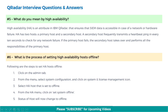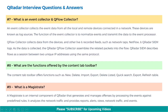Next, what is the process of setting high availability hosts offline? Following are the steps to set HA hosts offline: Click on the admin tab, from the menu select system configuration, and click on the system and license management icon. Then select the HA host that is to be set to offline. From the HA menu, click on 'set system offline'. The status of the host will now change to offline.